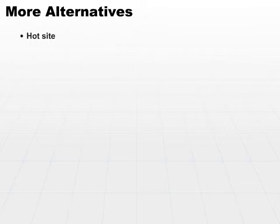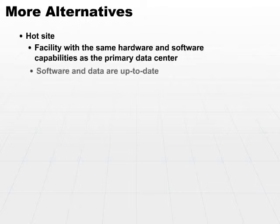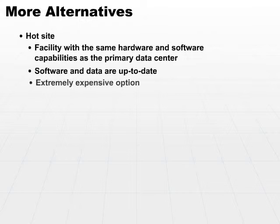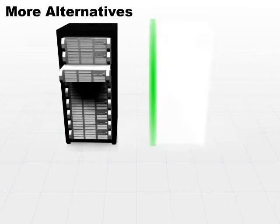The next site is a hot site. A hot site is a site that has the same hardware and software capabilities as the primary data center. It can be a real-time hot site or a near-real-time hot site. The software and data are as up-to-date as possible as technology and expense will allow. It is an extremely expensive option because you must maintain effectively a parallel data center.